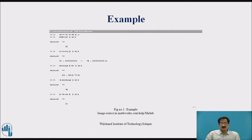So these are some examples which are shown over here. Z is equal to 3 plus 4i — absolute value, conjugate, and answers that will give the imaginary number and real number.